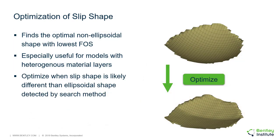Another significant feature is the optimization of your slip surface. Optimization works by finding an ellipsoidal slip surface and then finding the optimal non-ellipsoidal shape with the lowest factor of safety by adjusting the three-dimensional geometry. It's very useful for models with heterogeneous material layers and is a comprehensive method that works well for determining and tweaking your final slip surface.